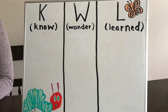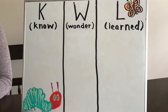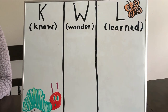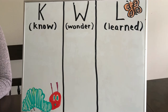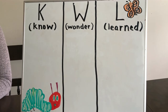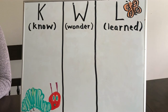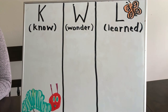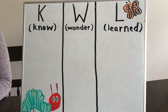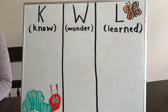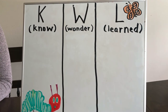Hi friends! Today we are going to learn how to make a KWL chart. A KWL chart is a great tool for organizing and learning information about a topic. Our topic this week is a butterfly.